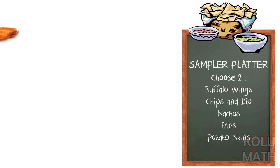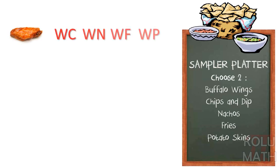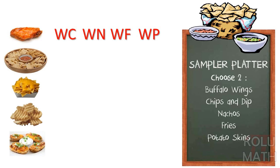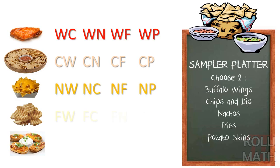So I could have wings with chips and dip. I could have wings with nachos. I could have wings with fries. And I could have wings with potato skins. So that was four different combinations. And we can chart those out using abbreviations. And I can actually do the same for the other items on the menu. I could have chips and wings. I could have chips and nachos. I could have chips and fries. And I could have chips and potato skins. The same is true for the rest of the items.